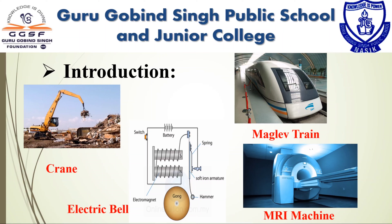Let's look at some pictures and see what they have in common. An electric bell, a crane lifting iron junk, a maglev train, and an MRI machine — they all work on the magnetic effect of electric current, also known as electromagnetism, and that is going to be the topic of today's video.